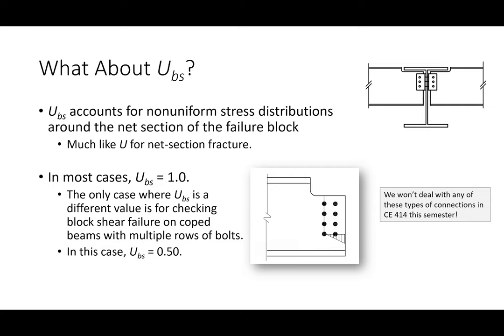The only other thing we haven't covered is the UBS term. In most cases, UBS equals 1. The only time it's not is when you have a coped beam with multiple rows of bolts at the end of the connection. Coping a beam involves cutting out the top flange and stem so that when you frame up a floor with beams going in both directions, they all sit flat on top. If you have a coped beam with multiple bolt rows, UBS is 0.5. But we won't be dealing with those connections this semester, so UBS will be 1 for us.